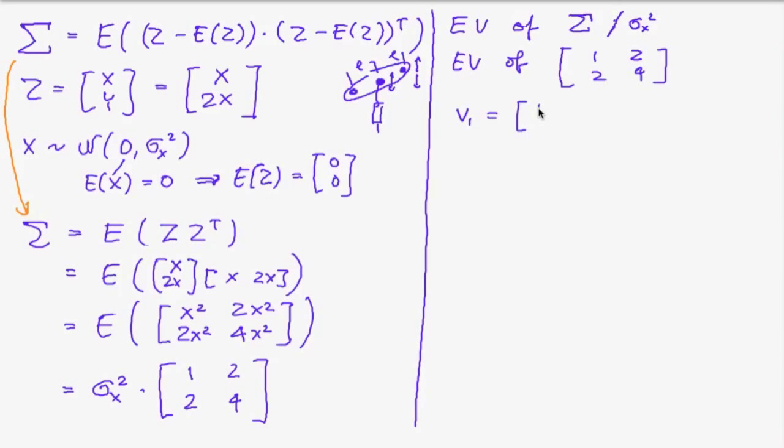you will obtain vector 1 is 1, 2. Because 1, 2, 2, 4 times 1, 2 is 1 times 1 plus 2 times 2 and 1 times 2 plus 2 times 4, which is 5, 10. And so this is 5 times 1, 2. And so the eigenvalue w1 is 5.